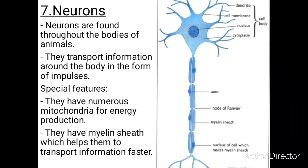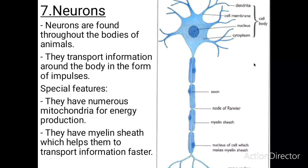Neurons are found throughout the bodies of animals and their main function is to transport information around the body in the form of impulses. The special features enabling neurons to transport information are numerous mitochondria for energy production and myelin sheaths which help them transport information faster. A neuron has a cell body and a section covered by the myelin sheath, which helps transport information faster.